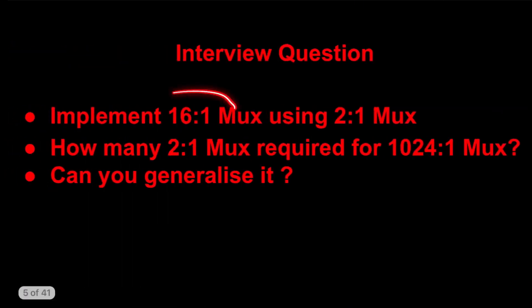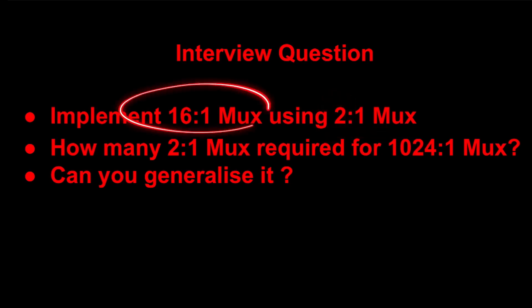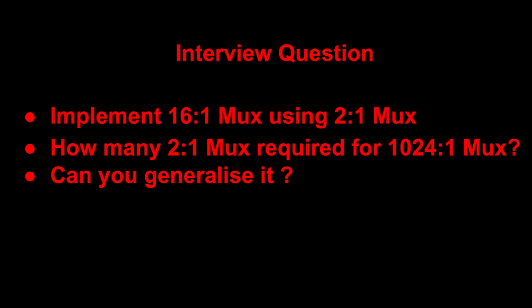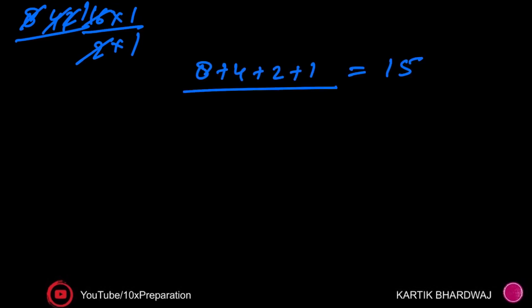Whenever you are making a higher-value MUX — where 16 inputs and 1 output are there — from lower MUXes where 2 inputs and 1 output are there, this is called a MUX tree. You start with the top value and keep dividing by 2: 8, 4, 2, 1. Then you simply add them — and you get 15. This is a shortcut I usually use for competitive exams, especially GATE and IES.